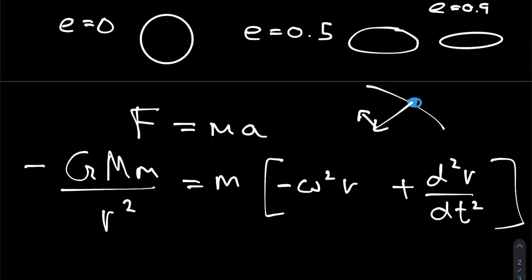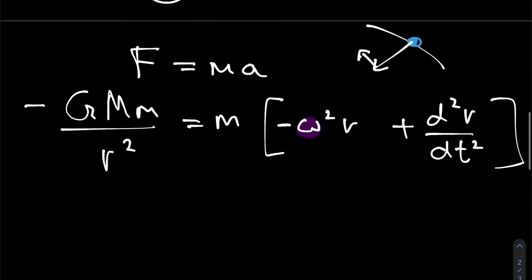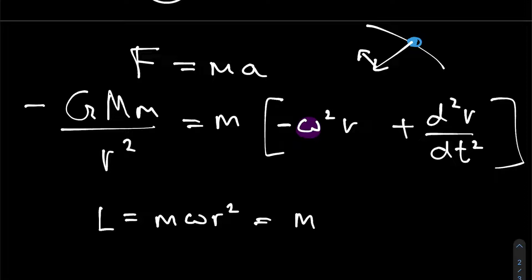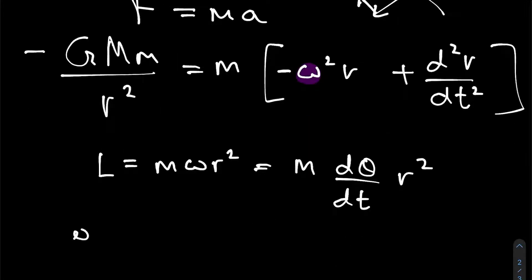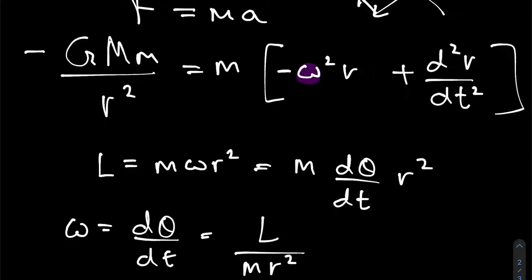The most annoying thing here is omega, which isn't constant during the orbit. However, the angular momentum of the planet is constant. We know angular momentum is L = m·omega·r², or equivalently L = m·(dθ/dt)·r². Rearranging, omega = dθ/dt = L/(m·r²). This is the first mathematical tool we'll use to simplify the problem.